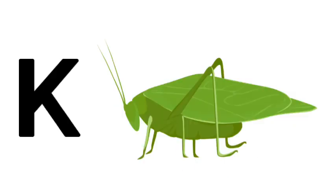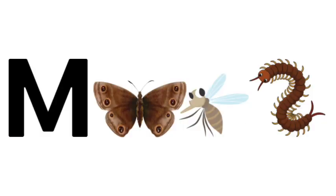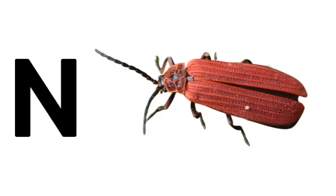K is for Katydid, L is for Locust, Ladybug and Leafhopper, M is for Moth, Mosquito and Mayfly, N is for Netwing.